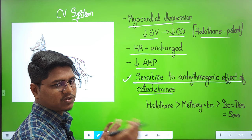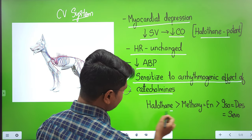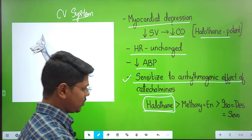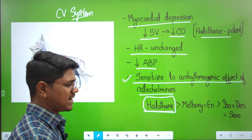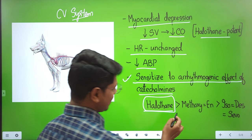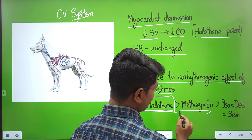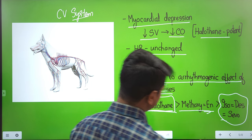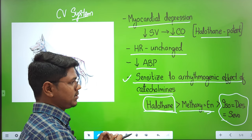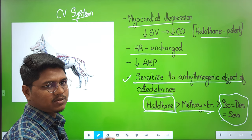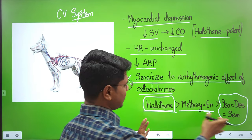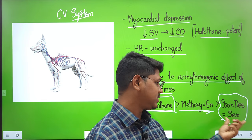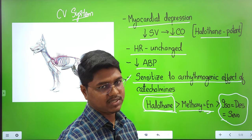When the animal is under surgical stress, catecholamines will be released, and when using inhalant anesthetics, this may sensitize the heart to arrhythmia. So you have to be very careful and provide proper analgesia to minimize surgical stress. Ranking of arrhythmogenicity: halothane is most potent, followed by methoxyflurane, which is nearly equal to enflurane. The newer anesthetics — isoflurane, desflurane, and sevoflurane — have very minimal arrhythmogenicity and are much safer.